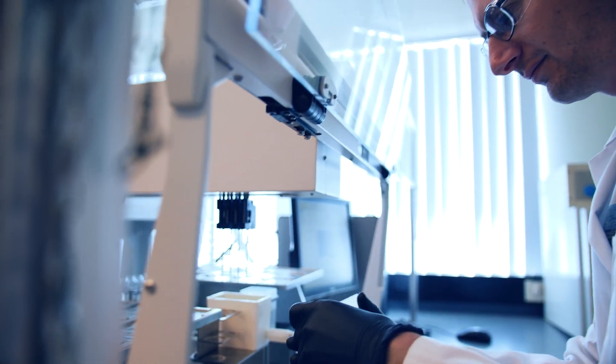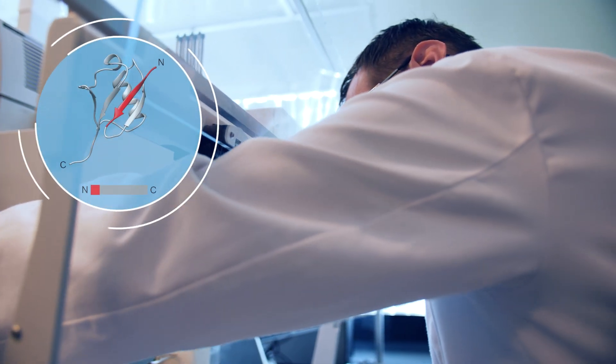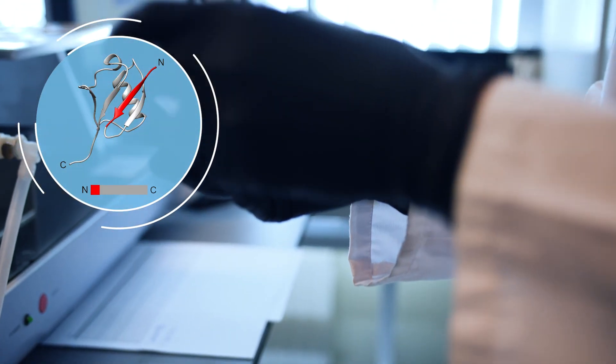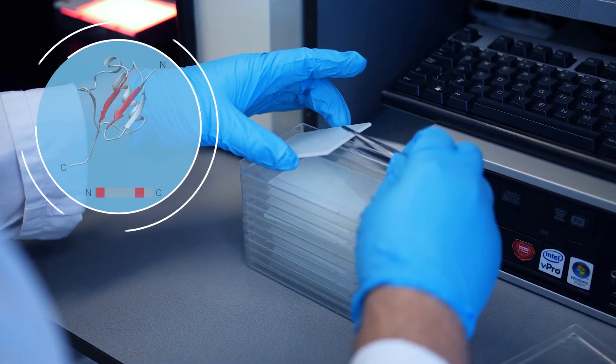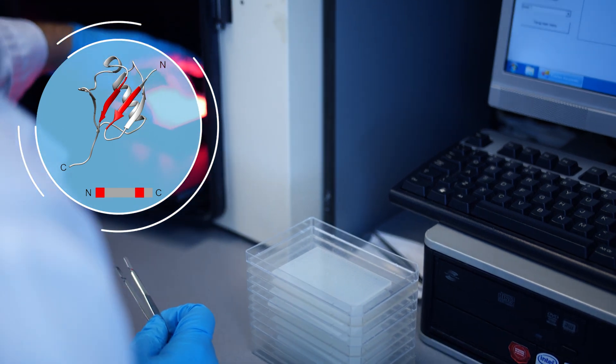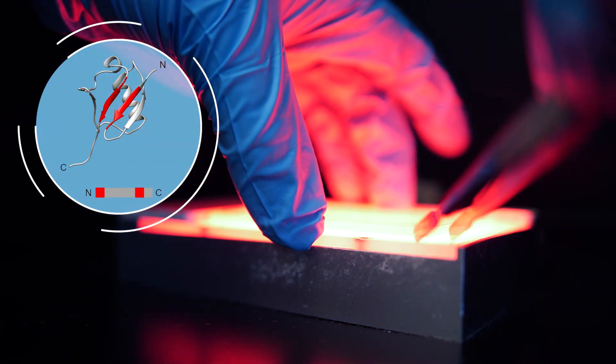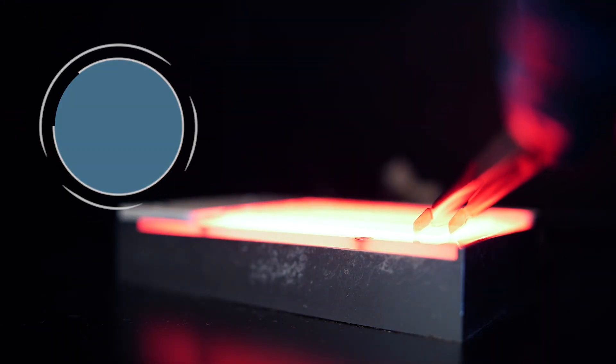There are different types of epitopes. Linear epitopes harbor binding residues that are contained within a linear stretch. Conformational epitopes require a typical structural element for recognition, and in discontinuous epitopes, parts that are separated in sequence come together structurally to form the full epitope. The majority of epitopes are discontinuous.